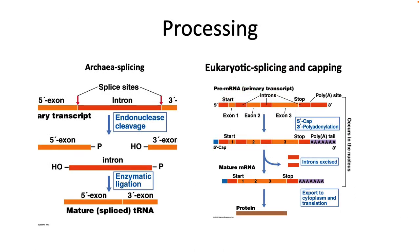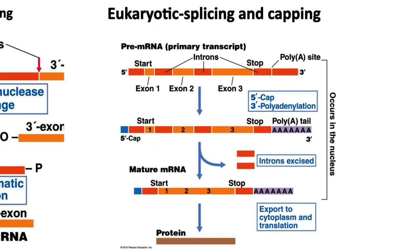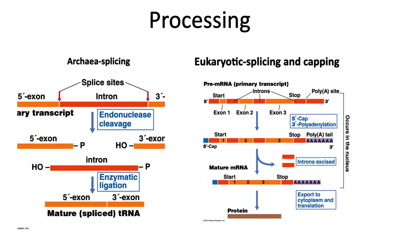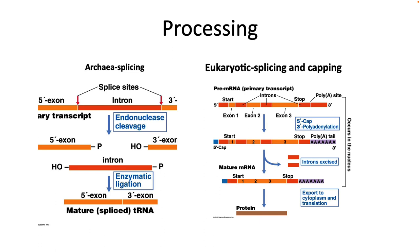Archaea and eukarya also have introns in their DNA, and enzymes splice them out during protein expression. In eukaryotic systems, a 5' cap and a poly-A tail are also added during mRNA synthesis. Okay, that's it for transcription. Let's now move on to translation.